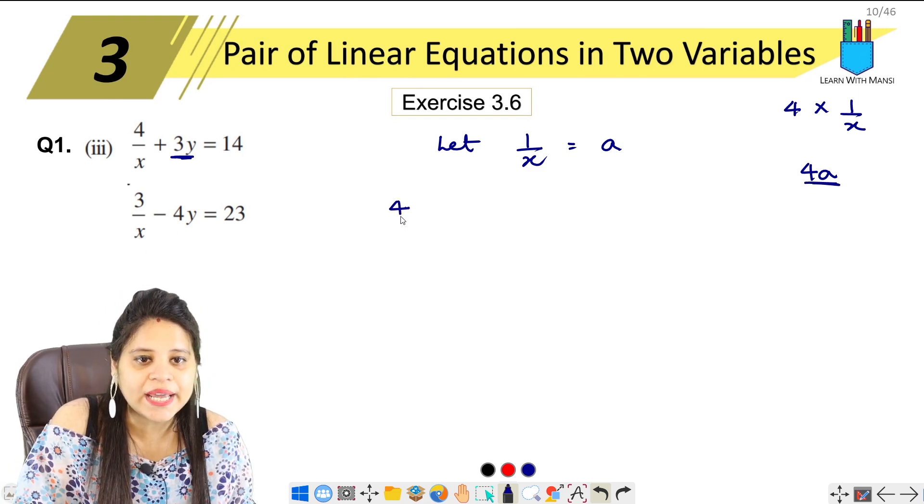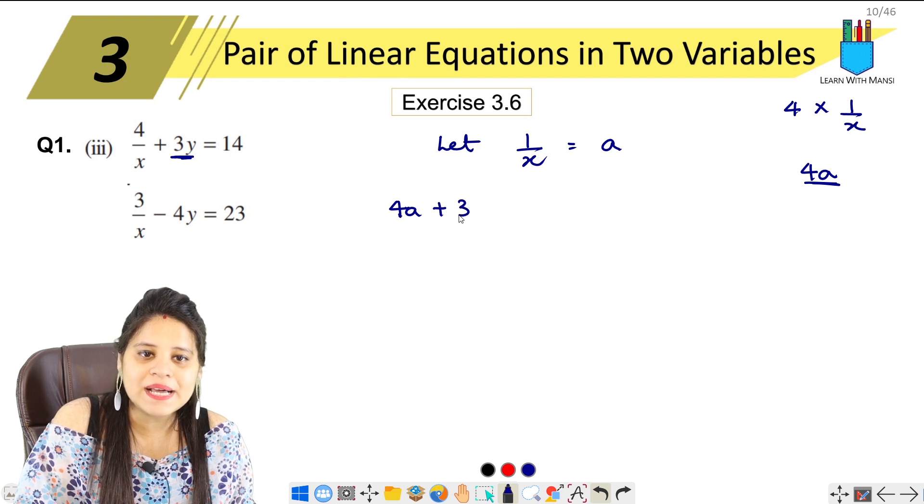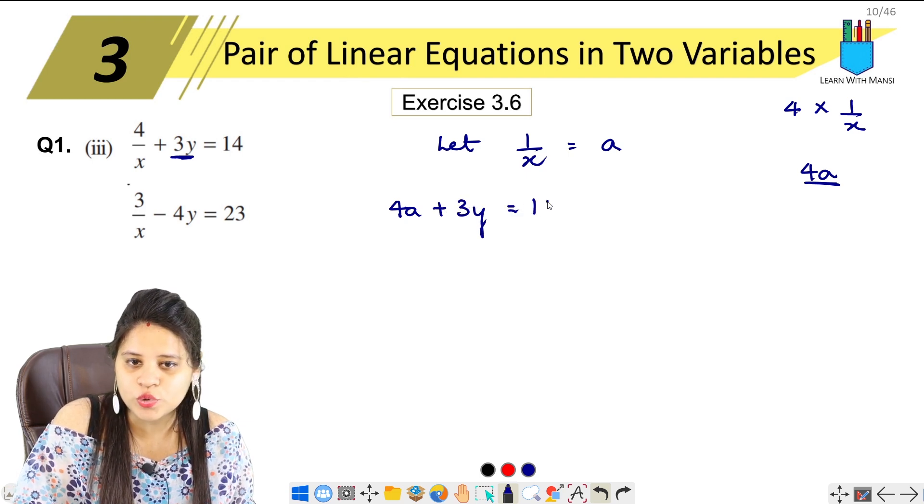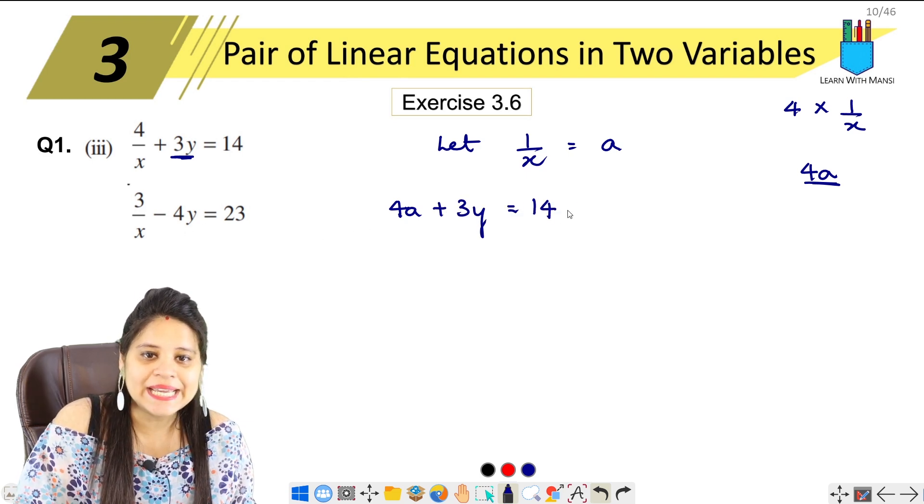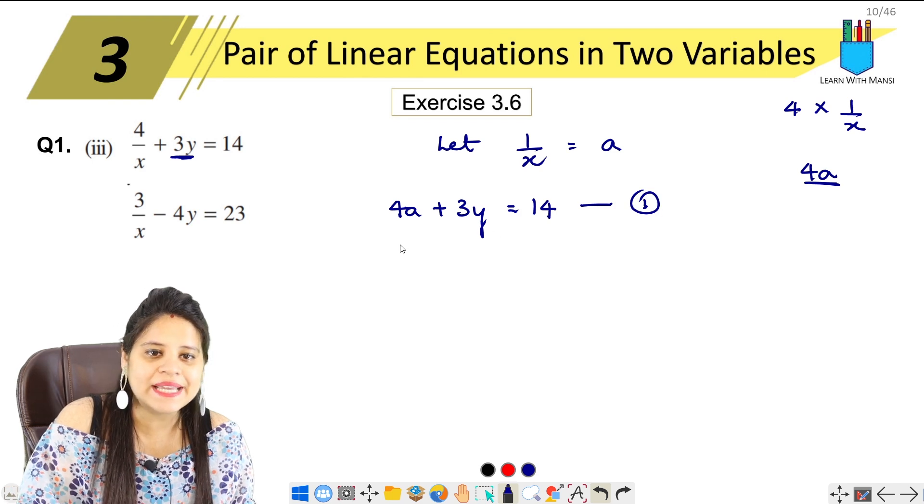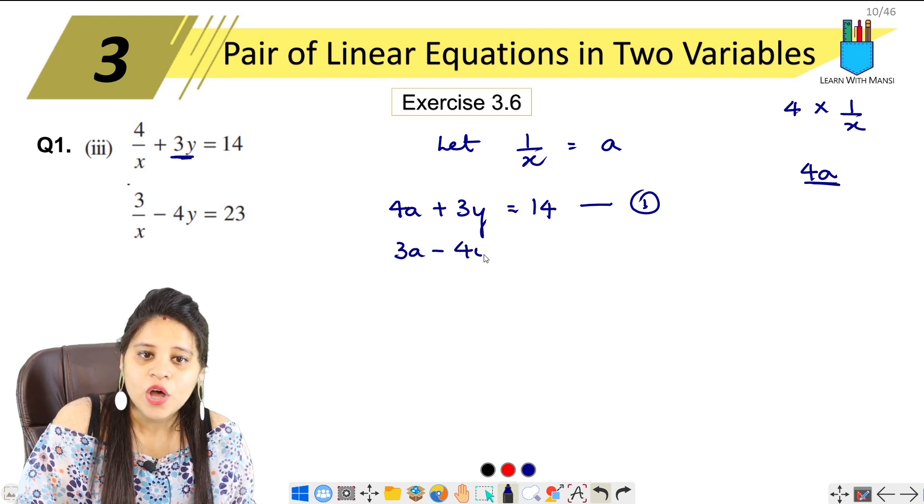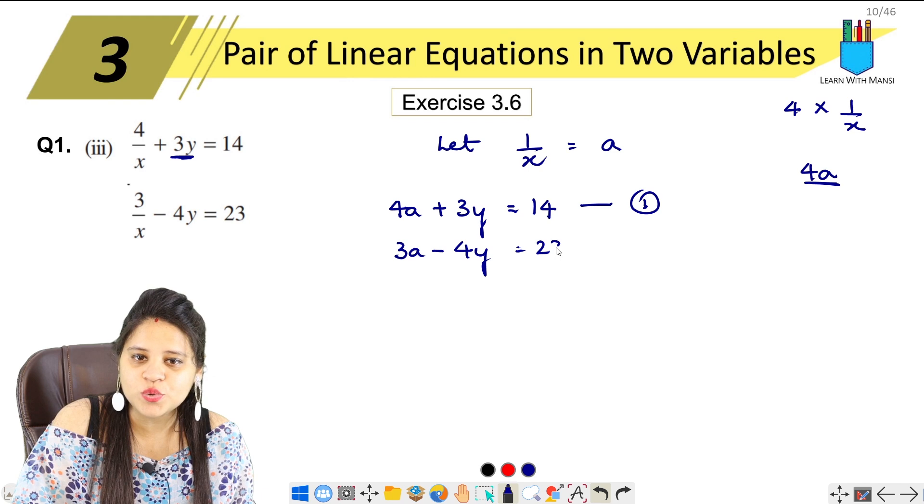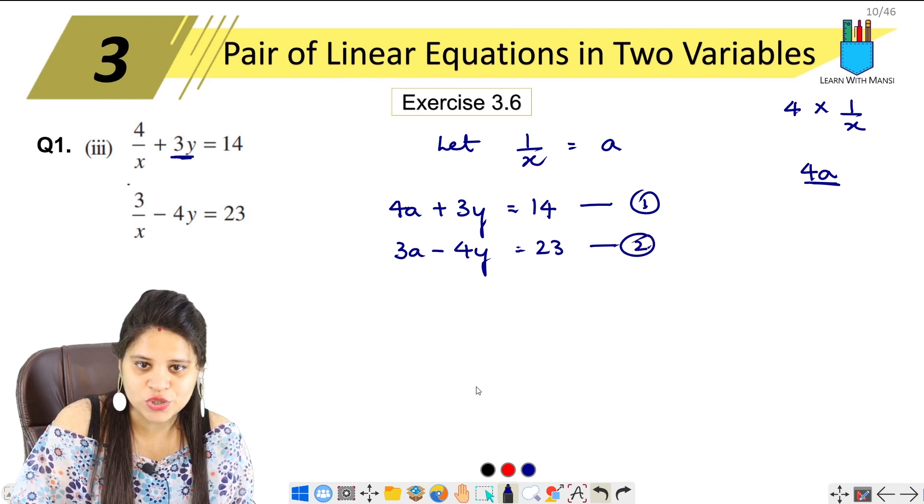So the first equation is 4a plus 3y equals to 14. Second, we name it first. Second, we have 3a minus 4y equals to 23. Second equation, okay?